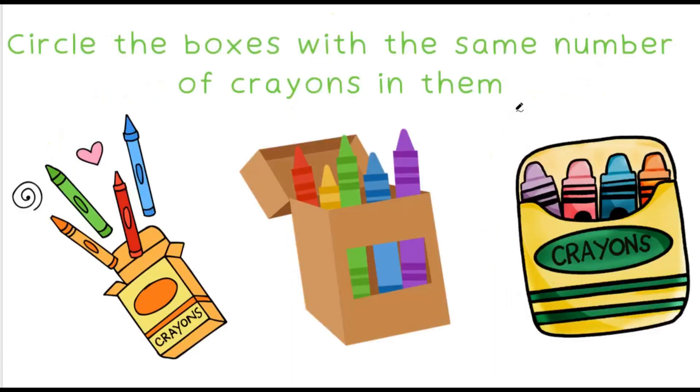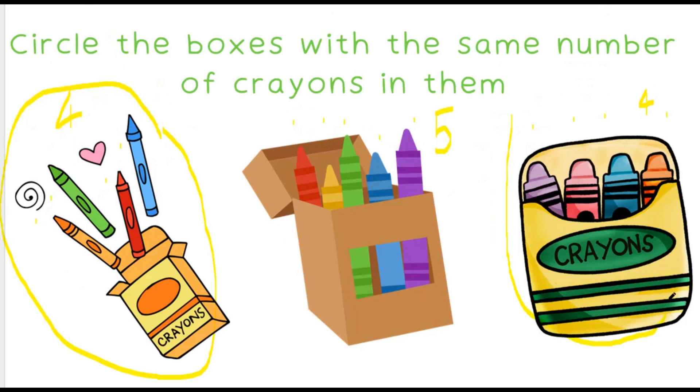Circle the boxes with the same number of crayons in them. In our first box we have 1, 2, 3, 4. In our second box we have 1, 2, 3, 4, 5. In our fourth box we have 1, 2, 3, 4. That means we will circle box number 1 and box number 2.